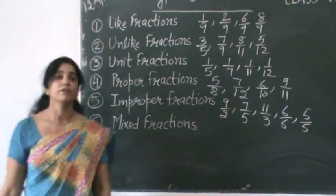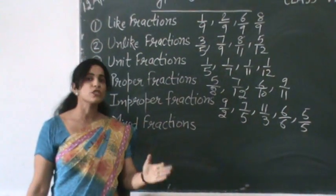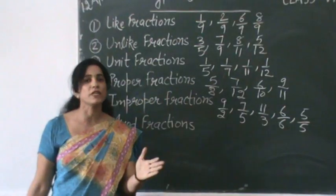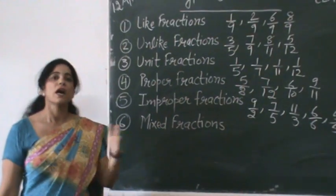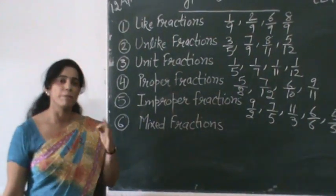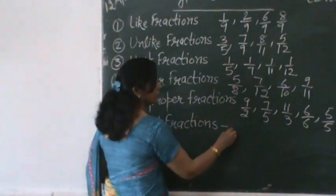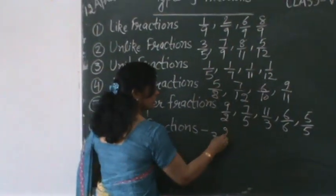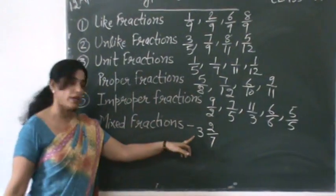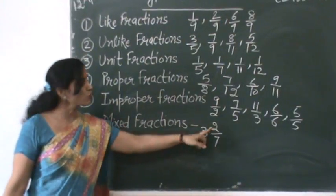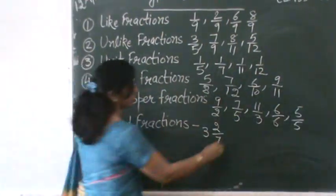Lastly, we have mixed fractions. Fractions which are a combination of a whole number and a proper fraction are called mixed fractions. For example, 3 and 2 by 7, where 3 is a whole number and 2 by 7 is a proper fraction.